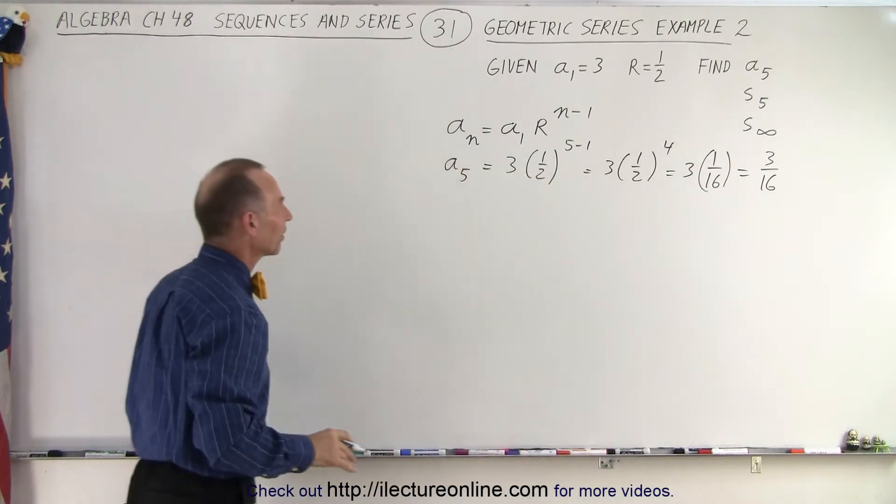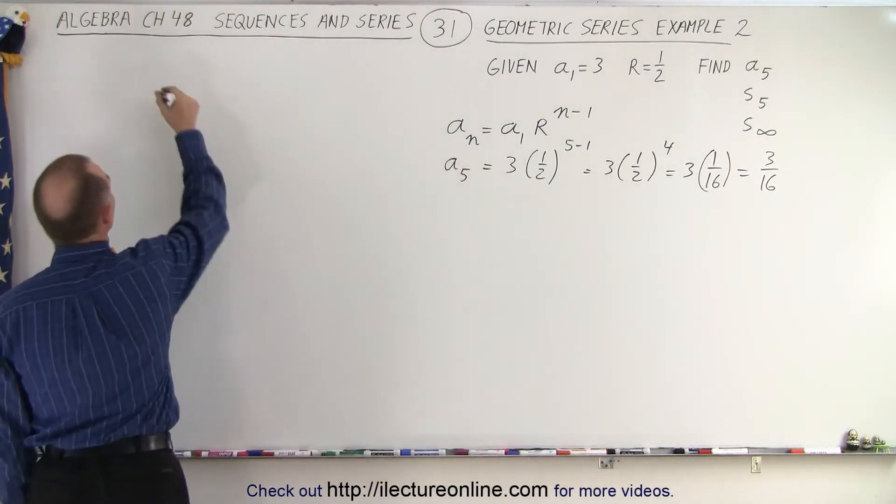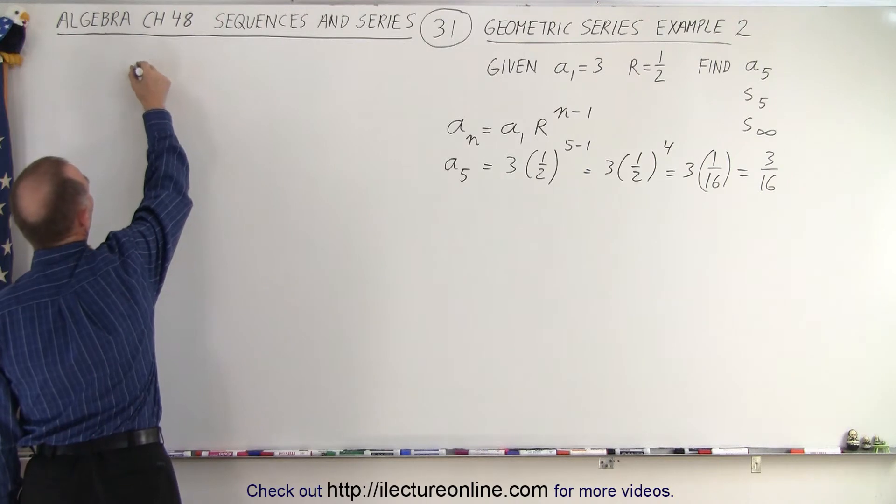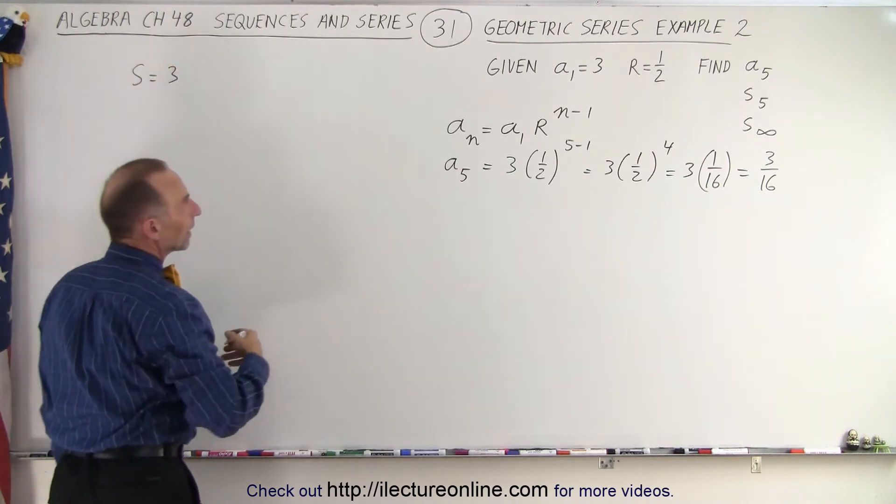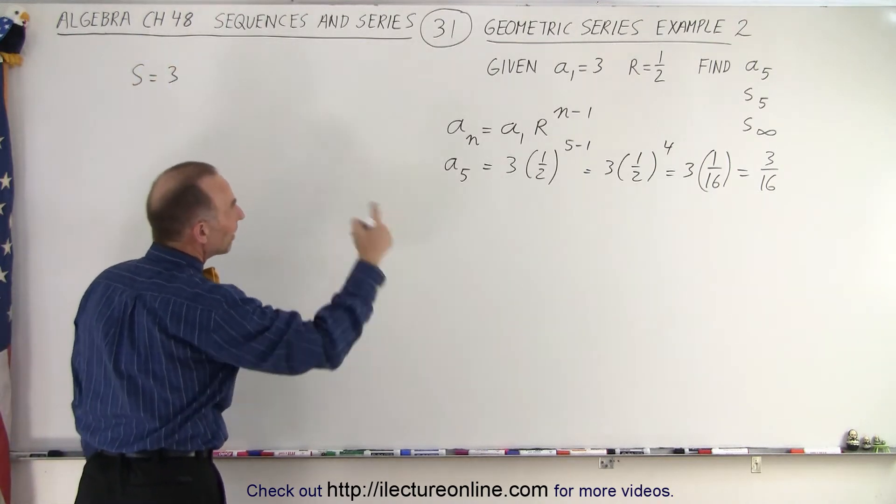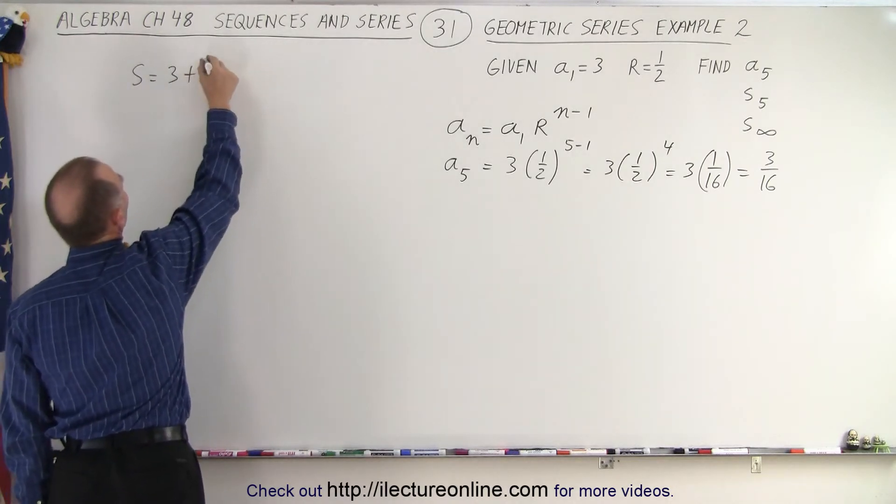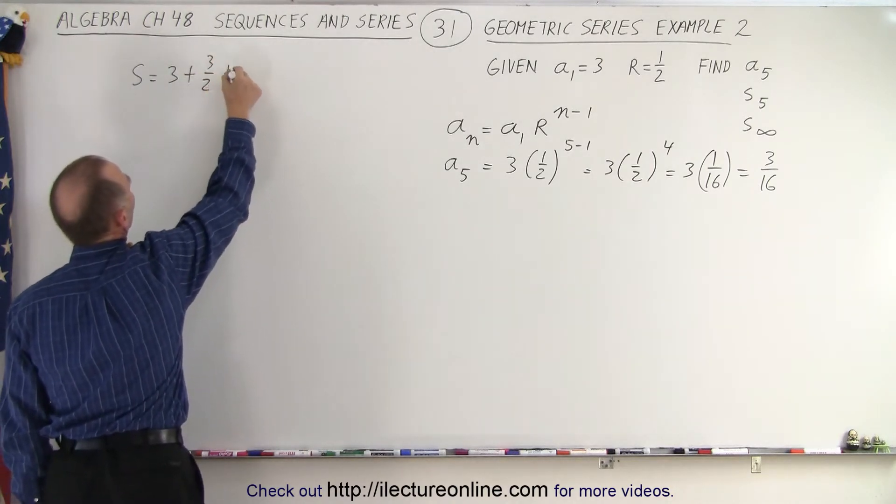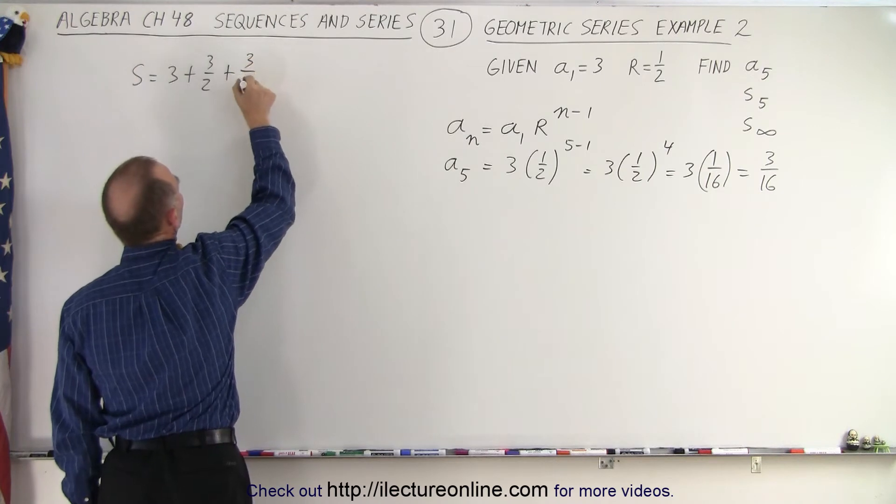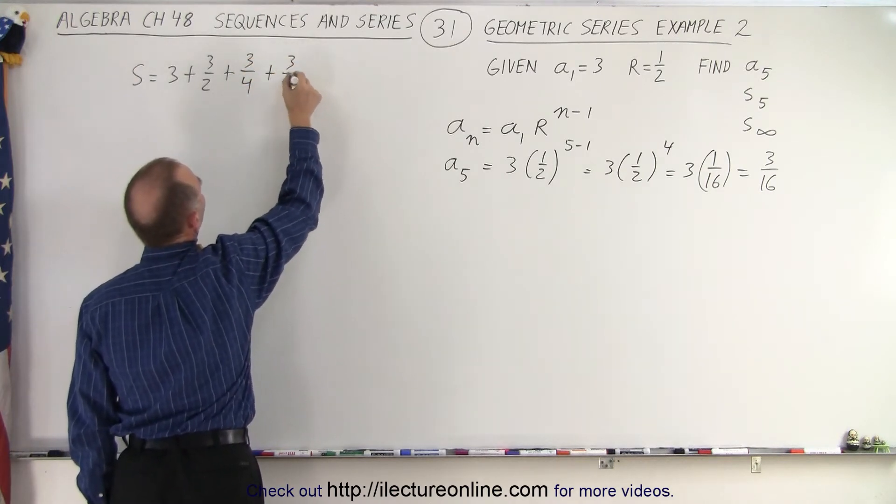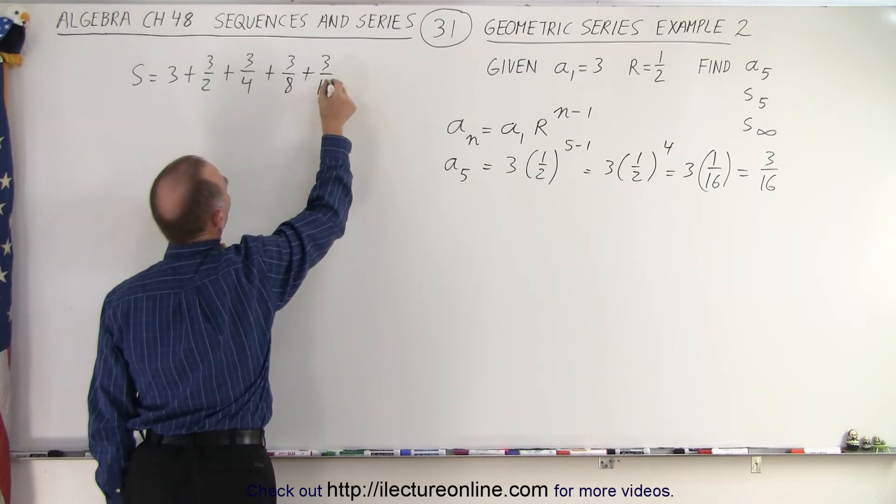Let's see if that was correct. Let's plug in what we think the series is. So in this case, the series is equal to the first number is 3. Then the next number is a half times 3, which would be plus 3 over 2. The next number would be half of that, which would be 3 over 4. The next number would be 3 over 8. And the next number would be 3 over 16.